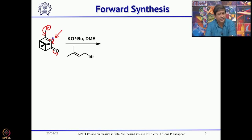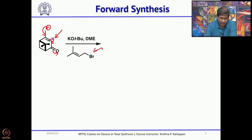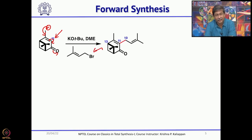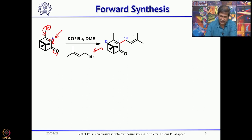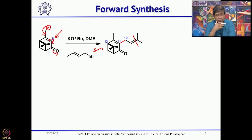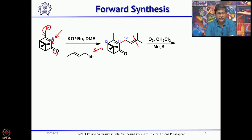When you treat this with potassium tert-butoxide, dienolate will be formed. When you quench this with prenyl bromide — this is called prenyl bromide — you get the alpha-alkylated product, the alpha-prenylated product. Next, you can cleave this double bond selectively because the internal double bond is electron-deficient whereas the side-chain prenyl group double bond is electron-rich. An electron-rich double bond can be easily cleaved in preference to the internal electron-deficient double bond.